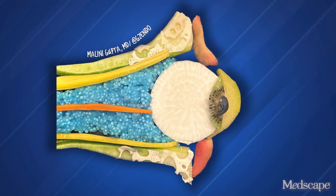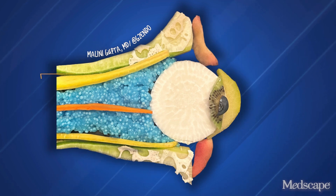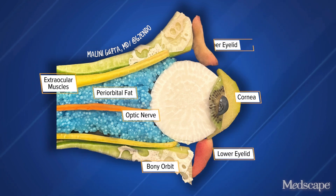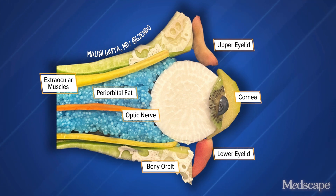I'm going to illustrate the structural changes seen in the orbit in this series of images. The normal eyeball is set within a fixed bony orbit and moves with activity of the extraocular muscles.